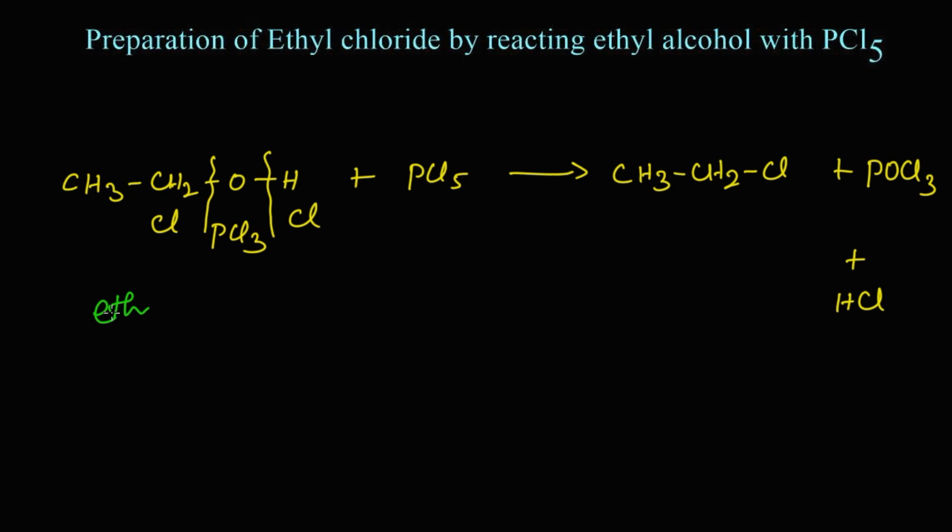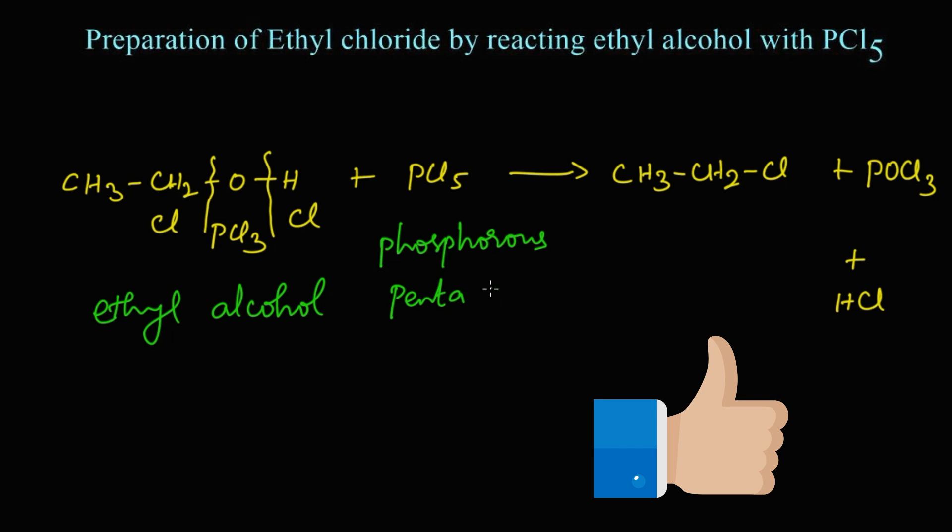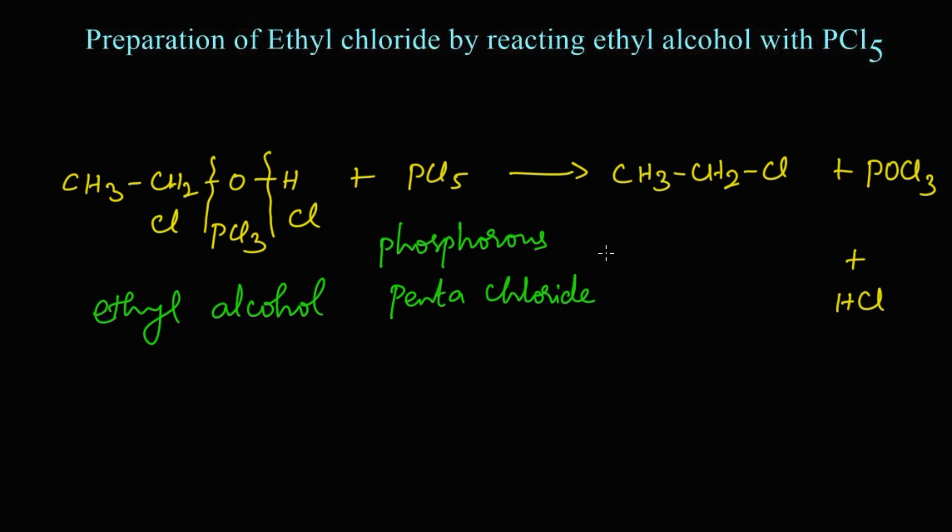Ethyl alcohol reacts with phosphorus pentachloride to give chloroethane, or else ethyl chloride. This is phosphoryl chloride and this is hydrogen chloride.